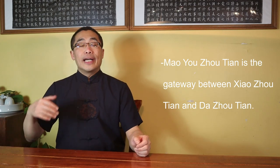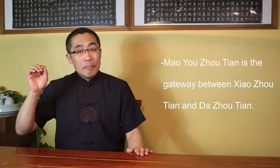Function of Mao You Zhou Tian. The Mao You Zhou Tian or Mao You Orbit Circulation does not get nearly as much emphasis as the Zi Wu Zhou Tian or Zi Wu Orbit Circulation. However, if you are serious about your Xiu Dao practice, you cannot afford to ignore Mao You Zhou Tian. Now, let me briefly introduce its functions. First, Mao You Zhou Tian is the gateway between Xiao Zhou Tian and Da Zhou Tian or Small Orbit Circulation and Big Orbit Circulation. In other words, it is very hard, if not impossible, to reach Da Zhou Tian without Mao You Zhou Tian.